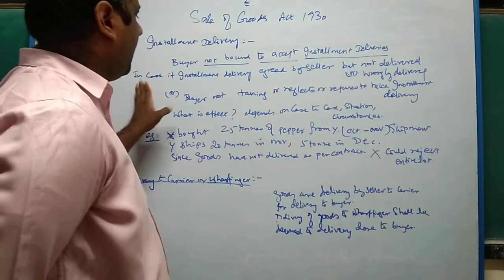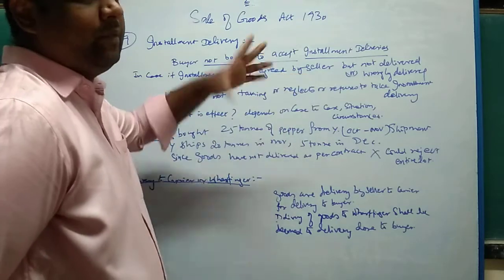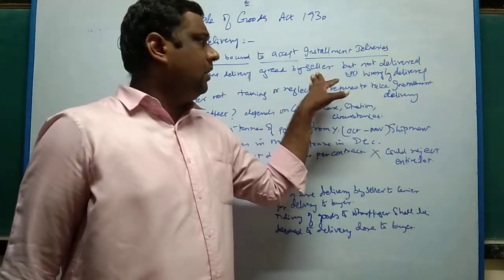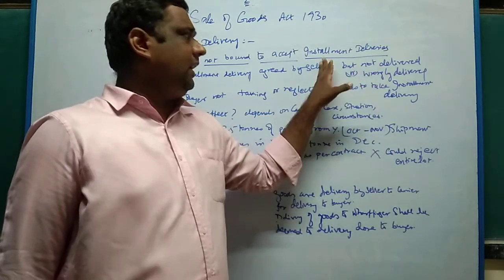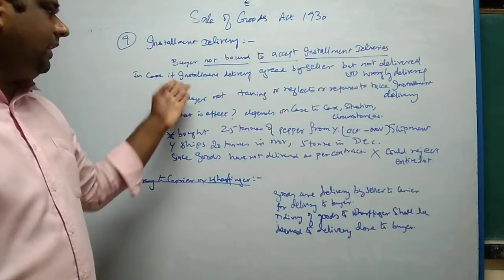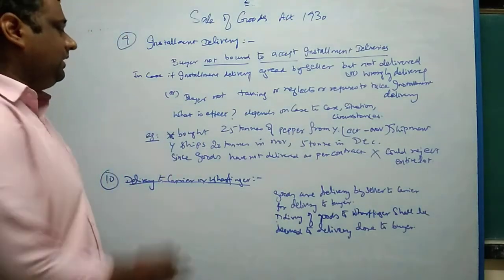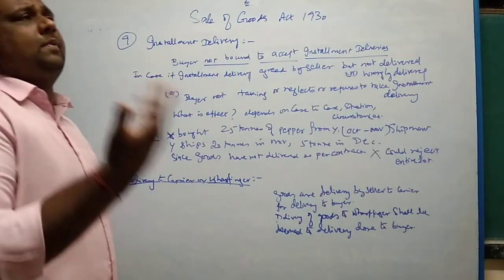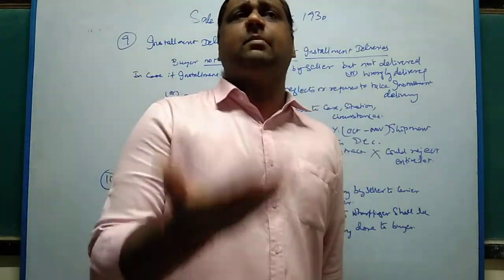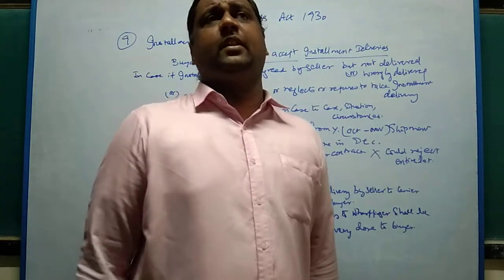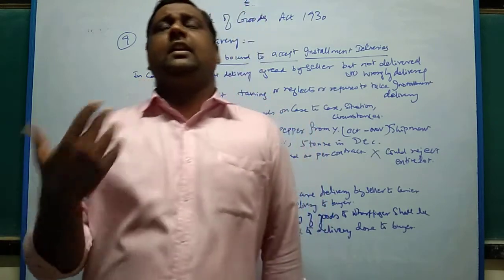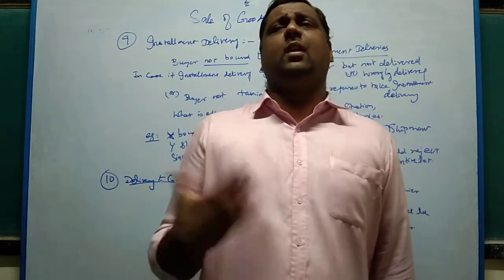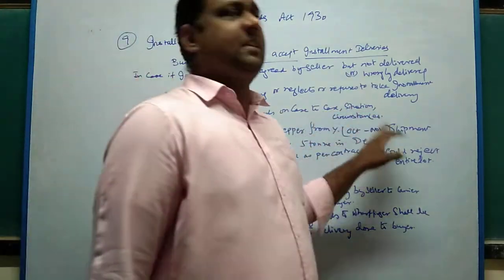In the exception category: if installment delivery is agreed by the seller and buyer, but the seller does not deliver, or delivers wrongly, or the buyer refuses or neglects to take installment delivery, then what is the effect? It depends upon the case-to-case situation — facts, circumstances, nature of the goods (perishable or non-perishable), attitude of the buyer, seriousness of the transaction, value of the goods, criticality, and legal aspects. So generally the effect depends upon facts, situations, and circumstances.